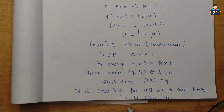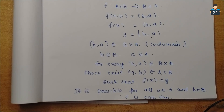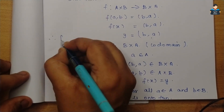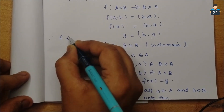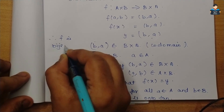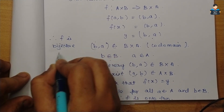Since f is both one-to-one and onto, therefore F is a bijective function.